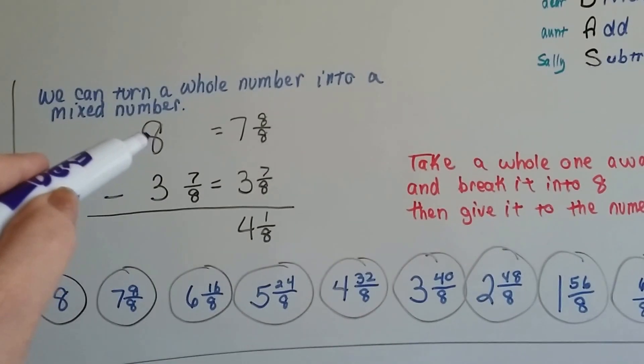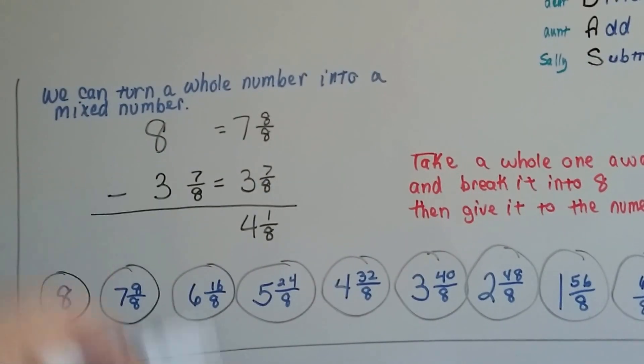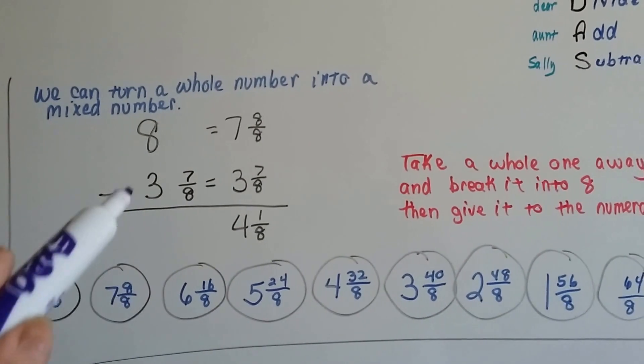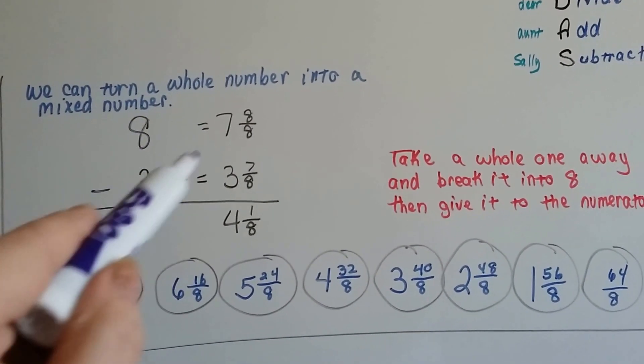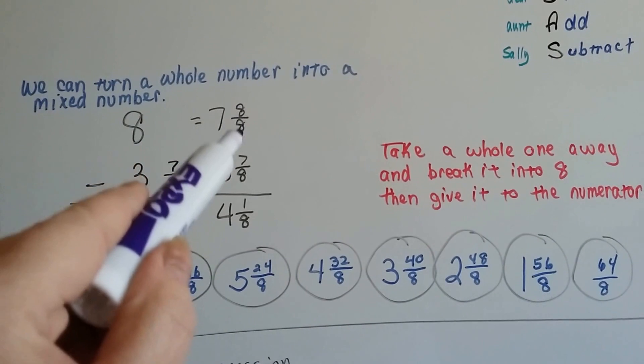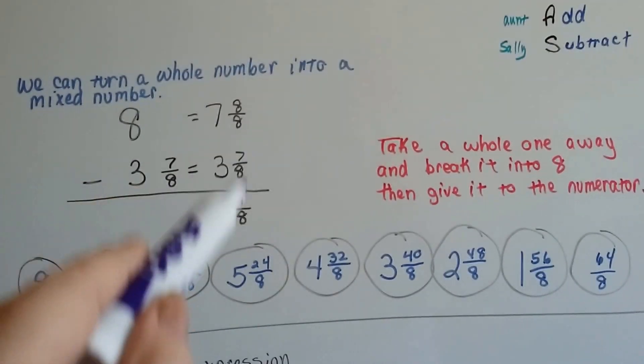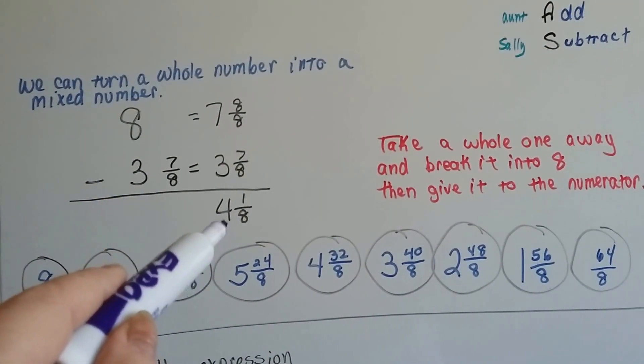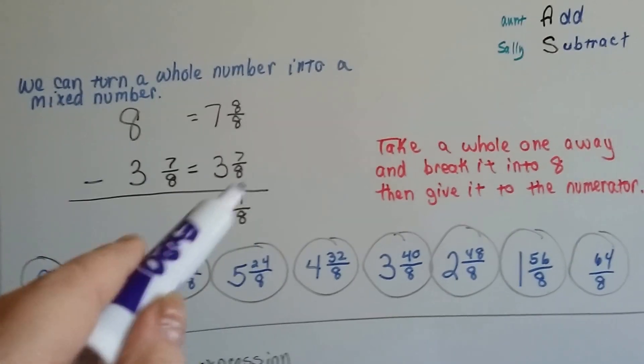What happens if you have a whole number and no fraction, and you need to take a fraction from it? We can take the 8 and turn it into 7 and 8 eighths, and then we could do our subtraction. We get 1 eighth and then a 4 here. We have 4 and 1 eighth.